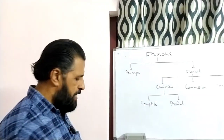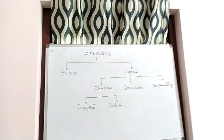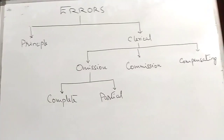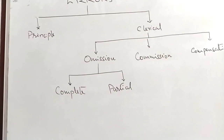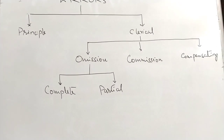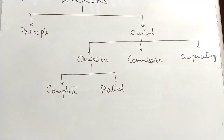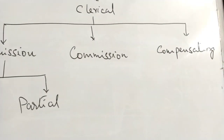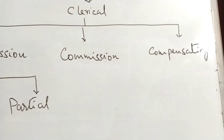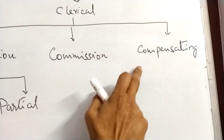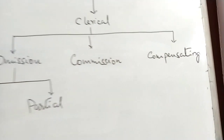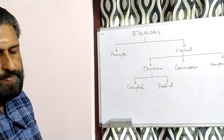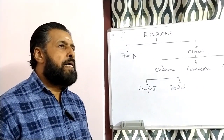Errors of commission occur when transactions are incorrectly posted, cast, or balanced in the journal or ledger. Compensating errors are errors that cancel each other out — one error compensates for another. These form the full classification of accounting errors.